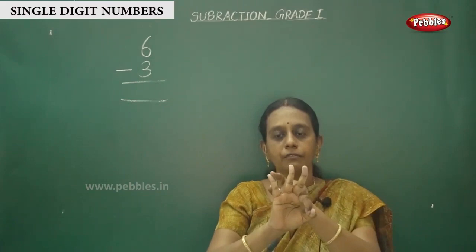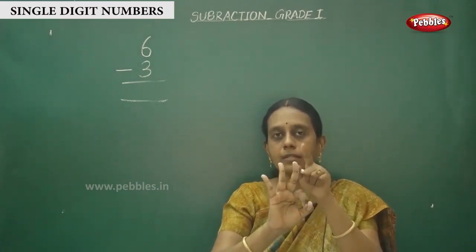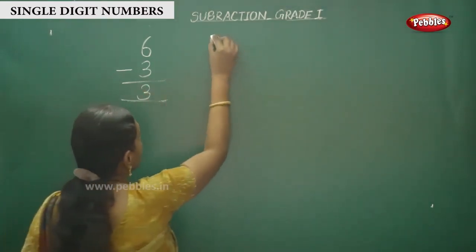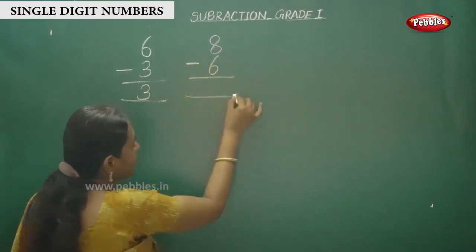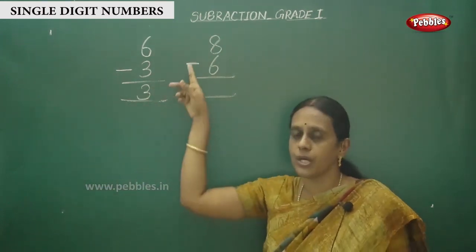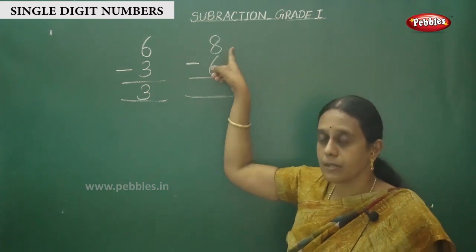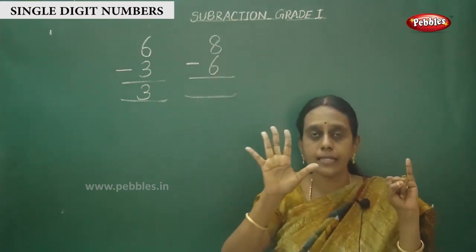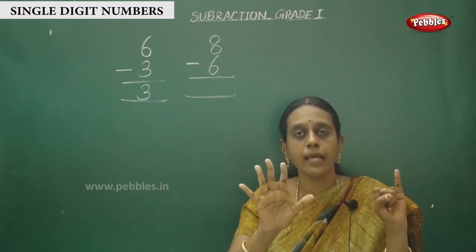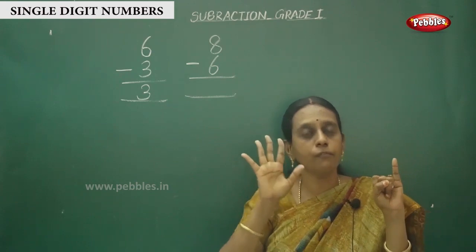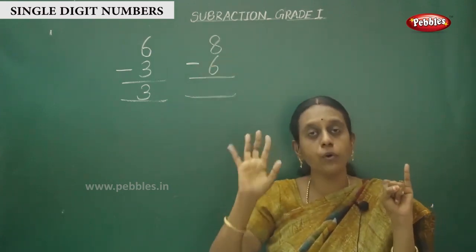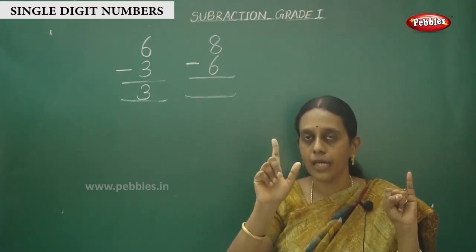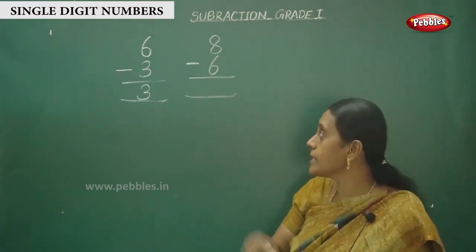One more sum: 8 in the mind, 6 on the fingers. This is a subtraction sum, so say the before number. Before 8 is 7, then 6, 5, 4, 3, 2. So the answer is 2.